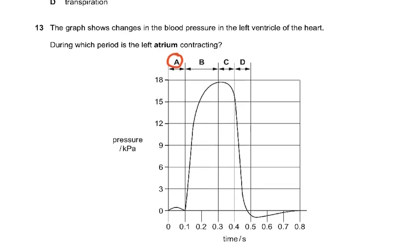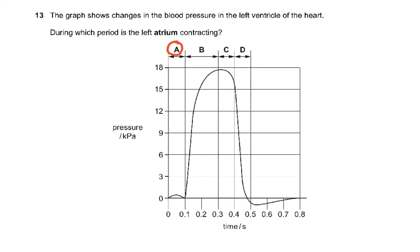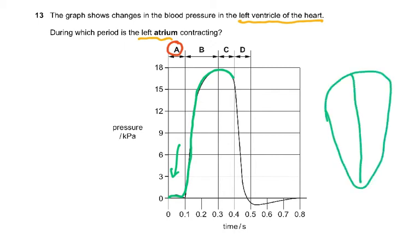Question 13: the graph shows changes in blood pressure in the left ventricle of the heart. During which period is the left atrium contracting? The graph shows the pressure in the ventricle rising. Pressure in the ventricle can only rise when the atrium pumps blood into it. So the left atrium contracts first, and that corresponds to section A on the graph, when pressure begins to rise.